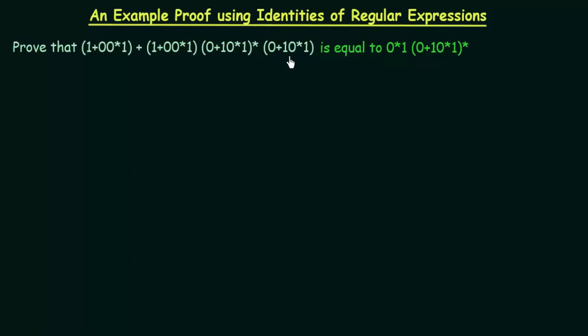These are (1+00*1) and we have to prove that this is equal to 0*1(0+10*1)*. So how do we do this? We will first take the LHS.